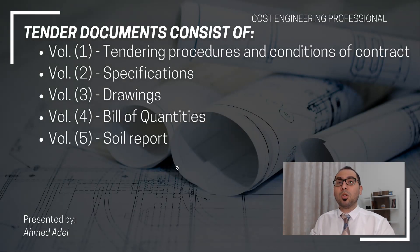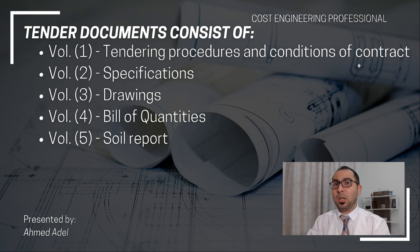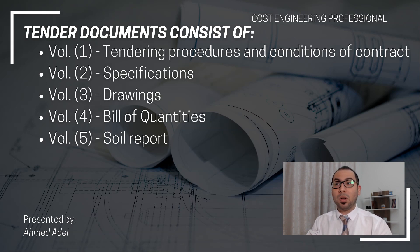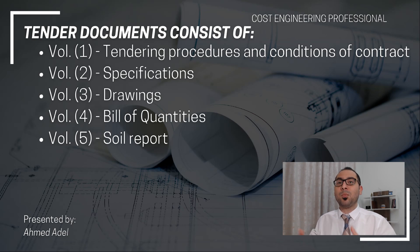These documents consist of five volumes. The first volume is tendering procedures and conditions of contract. The second volume is the specifications. The third one is the drawings, the fourth one is the bill of quantities, and the fifth one is the soil report. I am going to briefly explain each of these volumes, what it contains, and how we use them to price a project.